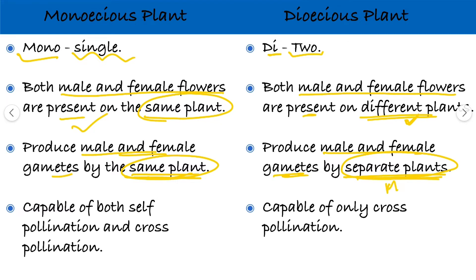The male plant will produce male gametes and the female plant will produce the female gametes. Next point: monoecious plants are capable of doing both self-pollination as well as cross-pollination.